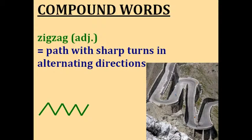Zigzag — this is a fun word to say. Something that is zigzag follows a path with sharp turns in alternating directions. You can see that green line that goes back and forth in the picture, which shows a zigzag road.